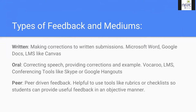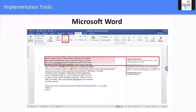Different types of feedback and mediums: written feedback involves making corrections to written submissions. Since we can't use a virtual red pen on computer screens, we talked about tools like Microsoft Word, Google Docs, and making written corrections in LMSs like Canvas. There are lots of tools within these programs that allow us to give specific feedback — we can add notes, use color coding, and different strategies to help students understand the feedback.